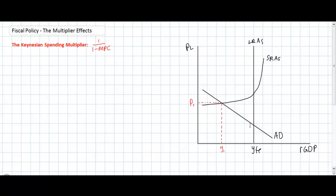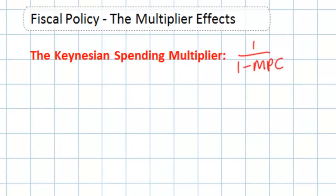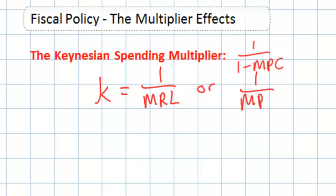This is a continuation of our lesson on the different multiplier effects of fiscal policy. In our two previous lessons on fiscal policy we talked about the different types of policies a government may use in order to either stimulate or contract aggregate demand in the economy. In our previous lesson we talked about the government spending multiplier or the Keynesian spending multiplier, and showed how we could determine it by dividing one by the marginal propensity to save.